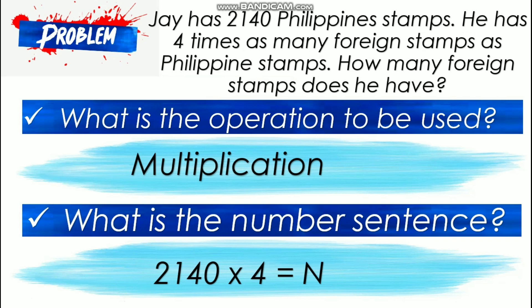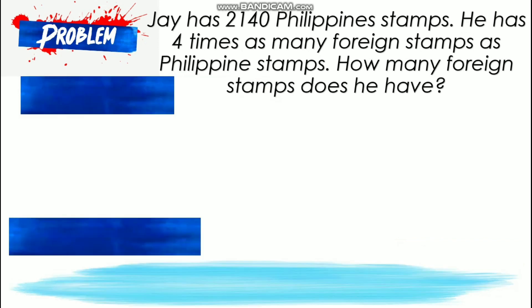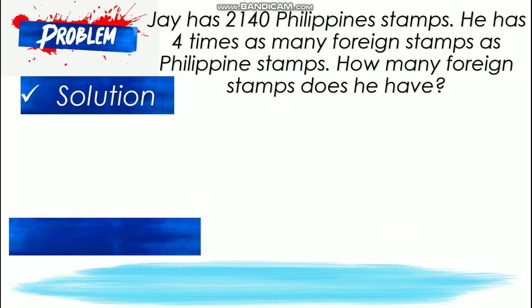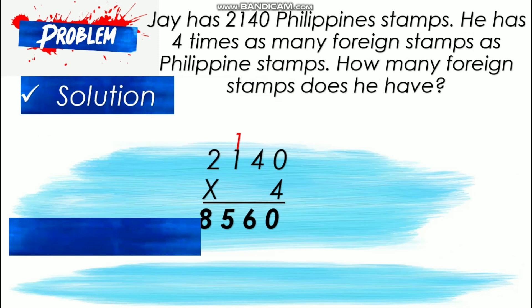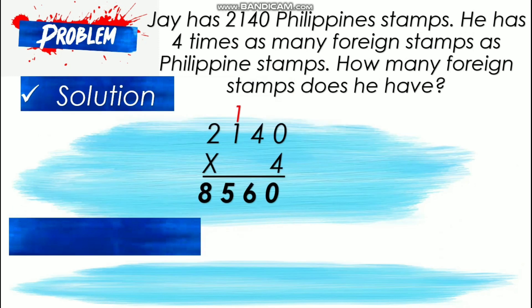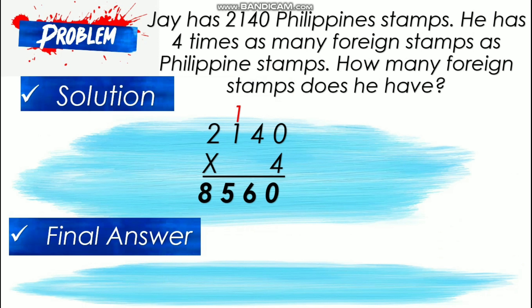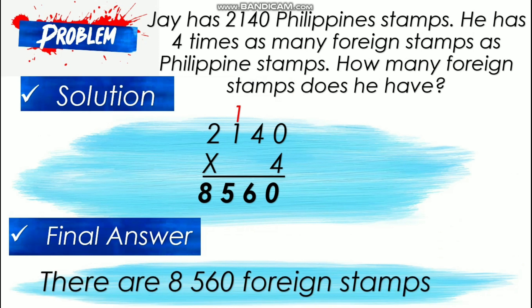Let us show our solution. Make sure that your solution is clear and justifiable. From that we can conclude the final answer, which is 8,560 foreign stamps. Don't forget the label in the final answer.